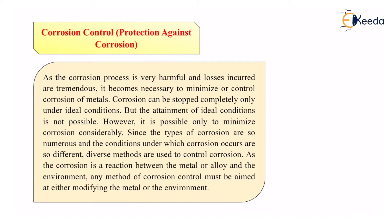However, it is possible to minimize corrosion considerably. We cannot stop it — it is going to happen. But we can minimize it as much as possible. Since the types of corrosion are numerous and the conditions under which corrosion occurs are so different, diverse methods are used to control corrosion. Corrosion is a concept with various ways it can happen, and because it is diversified, we cannot stop it completely.